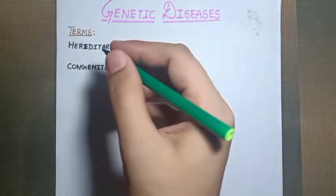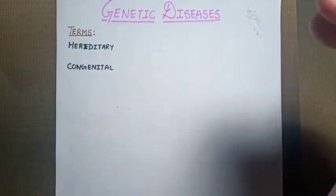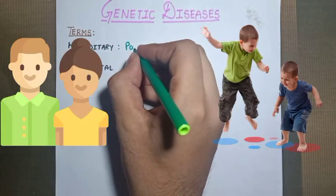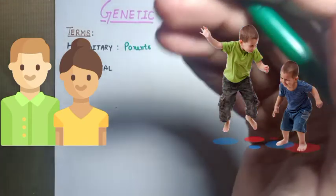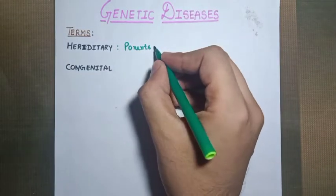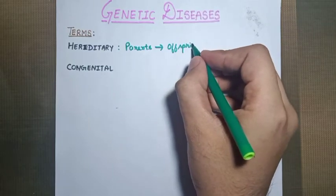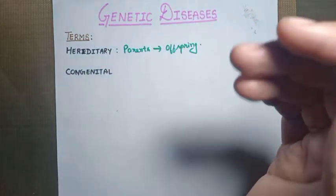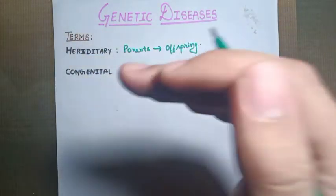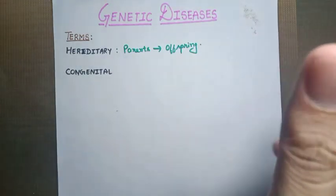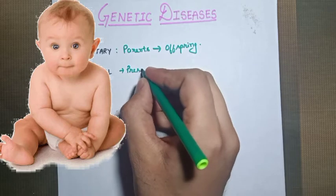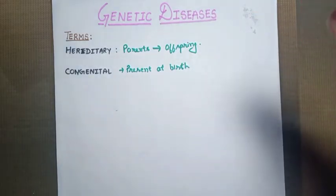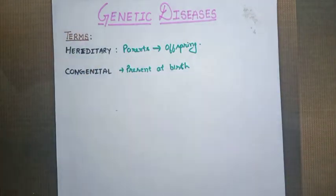What do we understand by the term hereditary? When I use the term hereditary for any disease, I mean that it will be transmitted from parents to offspring. So any disease being transferred from parents to offspring comes under the category of hereditary disease. What do we understand by congenital? The word itself means 'present at birth.' All diseases that are present at birth come under the heading of congenital disease.